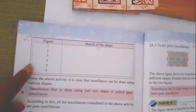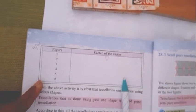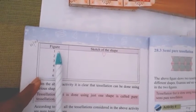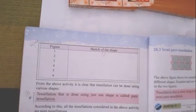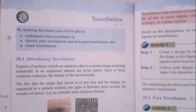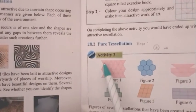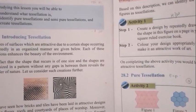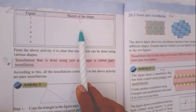Please observe several Tessellations given on page 149. Then turn to page 150 and fill in the table. For Figure 1, look at the sketch of the shape — what type of shape is drawn there? A triangle. So you have to draw a triangle. Then observe figures 2, 3, 4, 5, and 6 and draw the sketch of each shape.